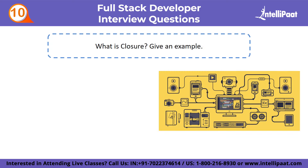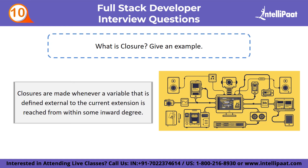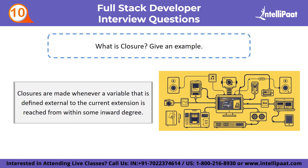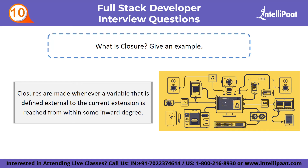Tenth intermediate question: what is closure? Give an example. Closures are created whenever a variable defined external to the current scope is accessed from within some inner scope. It grants you access to an outer function's scope from an inner function. Closures are created in JavaScript whenever a function is created. To use a closure, simply define and expose a function within another function.